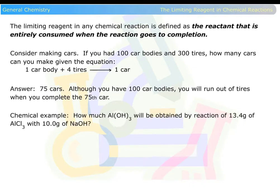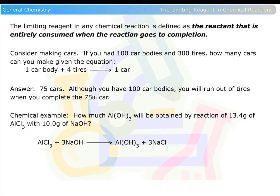Here's a chemical example. How much aluminum hydroxide will be obtained by reaction of 13.4 grams of aluminum chloride with 10 grams of sodium hydroxide? Aluminum chloride plus sodium hydroxide is equal to aluminum hydroxide plus sodium chloride.